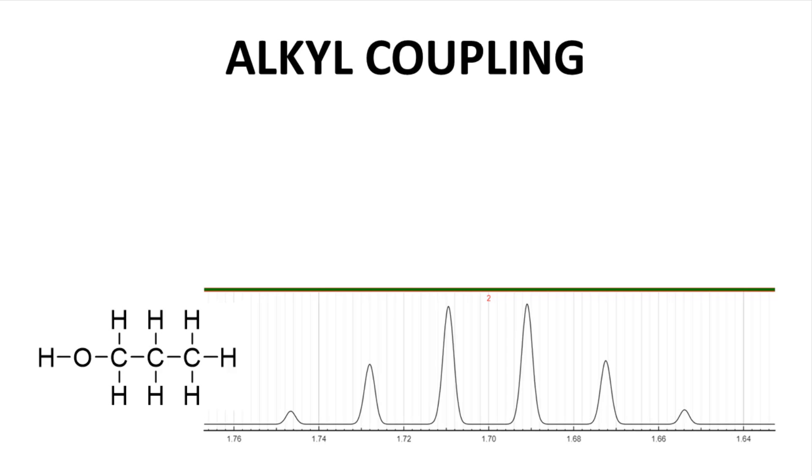In the lower left is propanol. Let's focus on the CH2 group in the middle of the molecule. These hydrogens have three neighbors on the right in the methyl and two neighbors on the left in the other CH2 group. These neighbors are not identical, so their J values may not be the same.